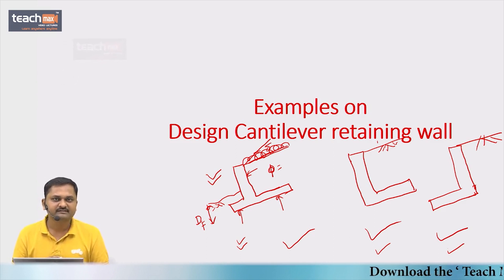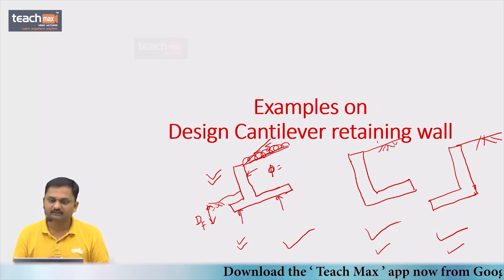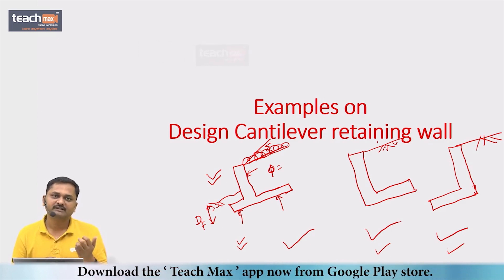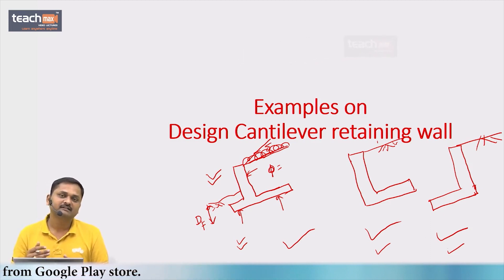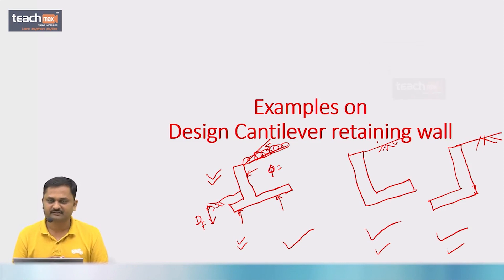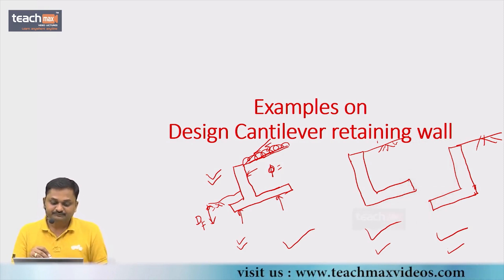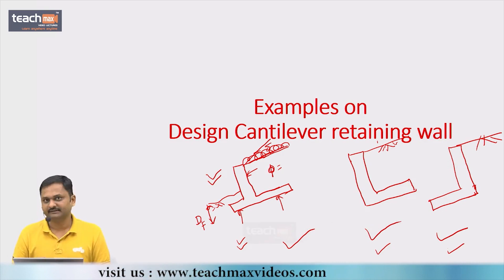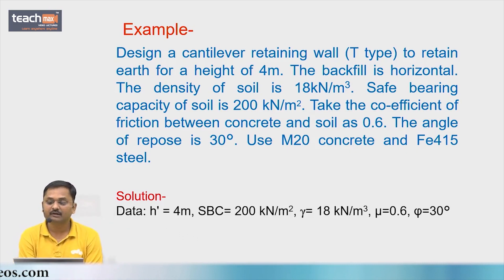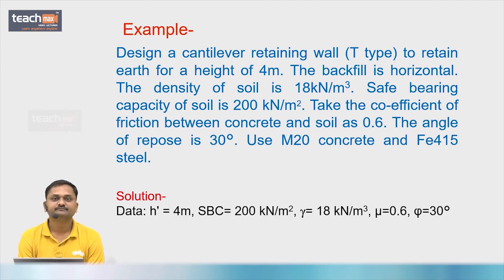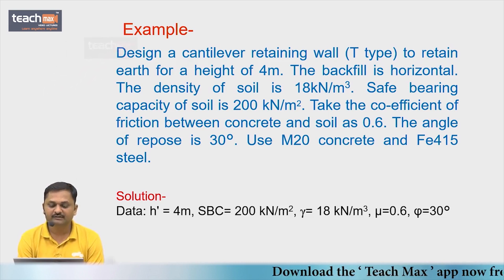There are two theory questions that might be asked based on the design of cantilever retaining walls: one on types of retaining walls, and one on determining earth pressure for a given soil condition. Now let us design the cantilever type of retaining wall. The example: design a cantilever retaining wall T-type to retain earth for a height of four meters. The backfill is horizontal and the density of soil is 18 kN/m³.